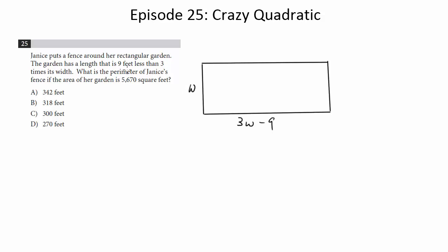We also know that the area is 5,670, and we want to know the perimeter. So we basically need to get the length to these sides, and then we just add up the four sides to get the perimeter, but getting the w is the key here. So we can set up an equation, w times 3w minus 9, length times width, should equal 5,670. So let's do that.